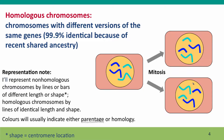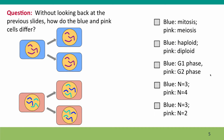When the cell undergoes mitosis, it's critical that the daughter cells inherit exactly the same set of chromosomes that the parent cell had, because mitosis is a purely replicative division — the daughter cells are copies of the parent cell. Now, here's a question: without looking back at the previous slide, how do the pink cells and the blue cells differ? Pick as many of these as you think is correct.